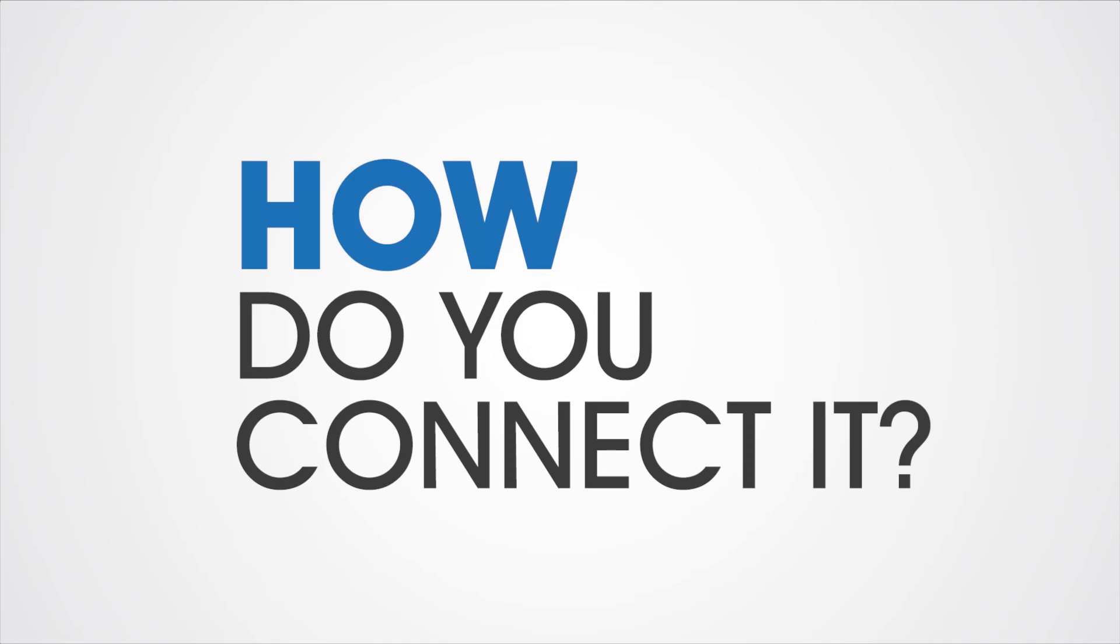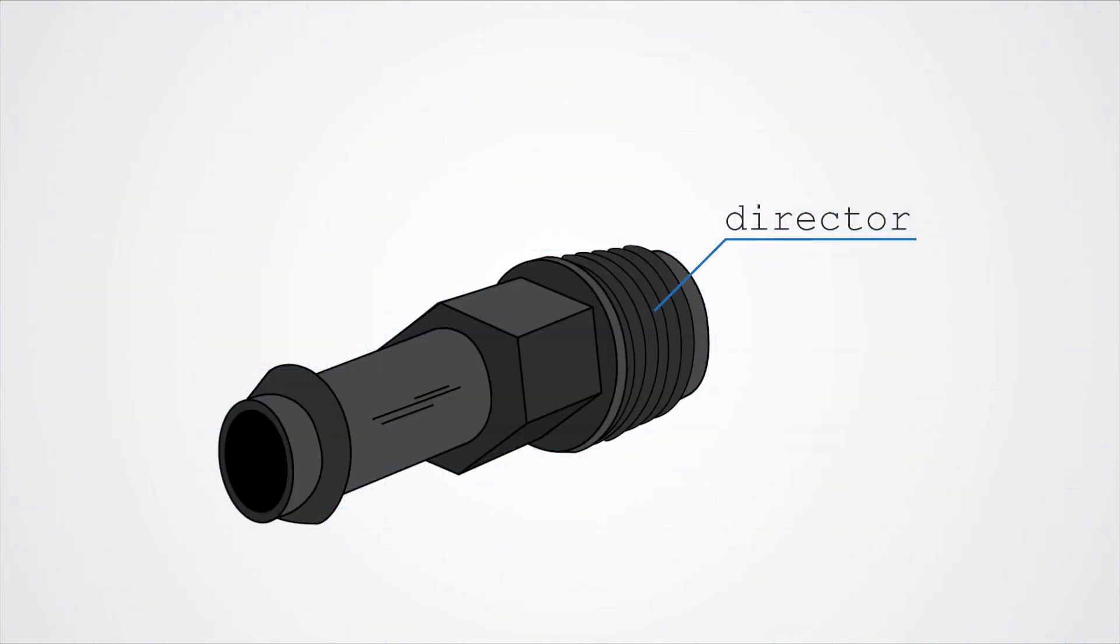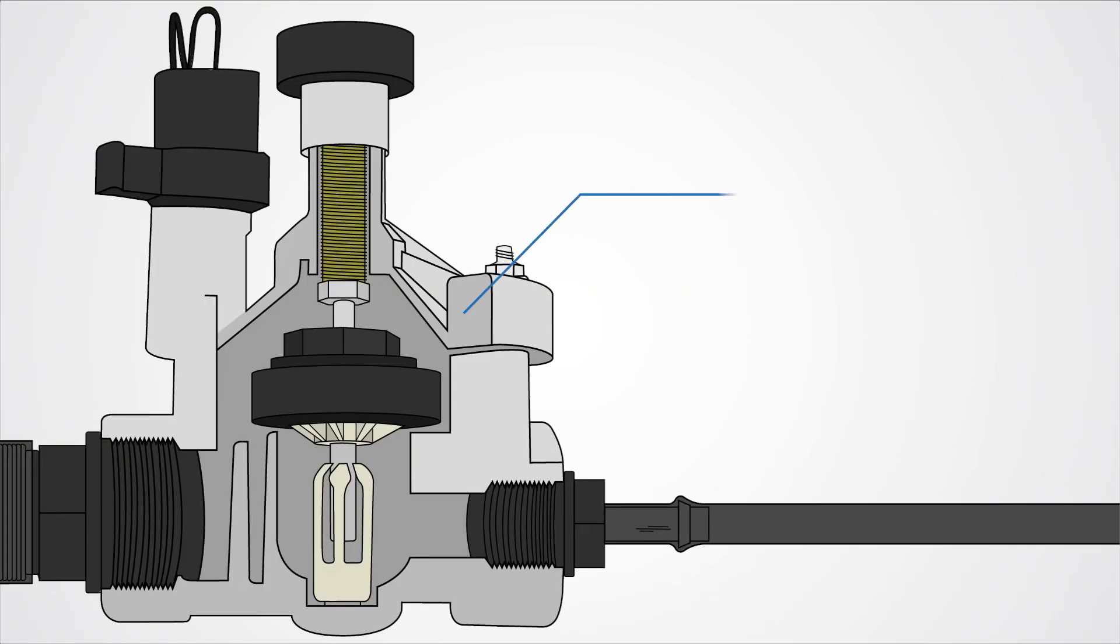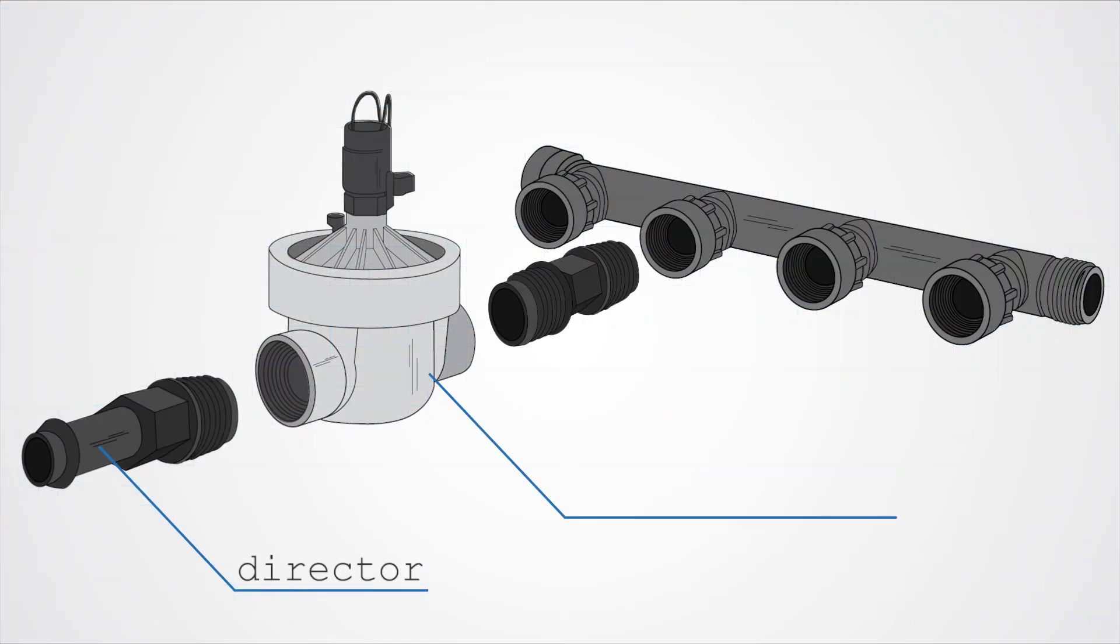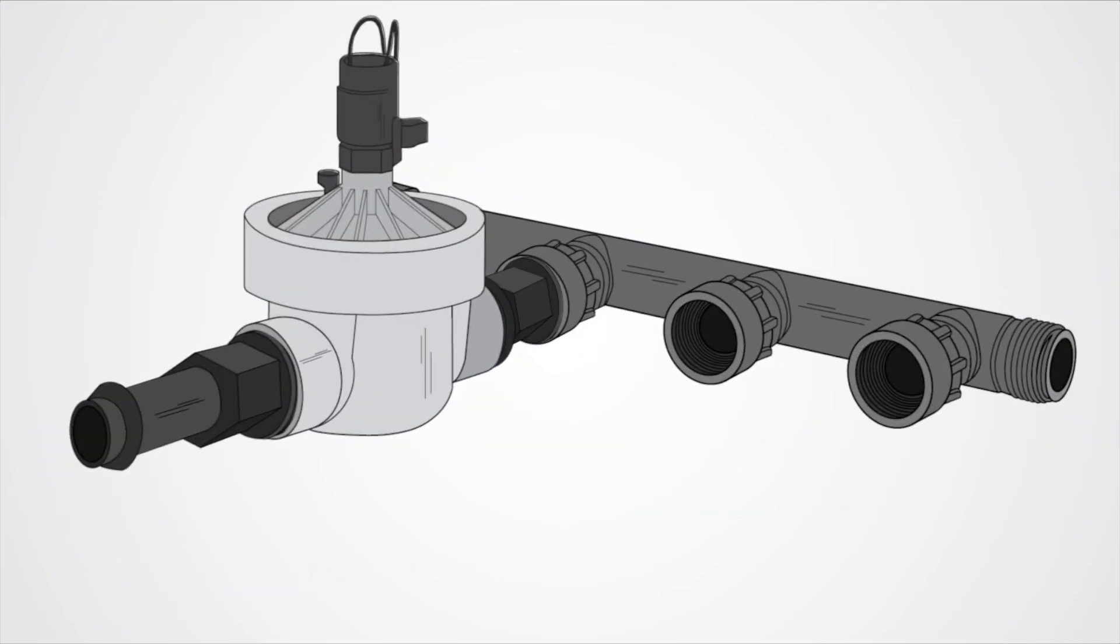To connect your automation to your irrigation system, you'll need these things. The director does what it says. It directs the water from the solenoid valve into the poly pipe, through to your irrigation system. The threaded end of the director screws onto the solenoid valve. And the nipple connects the manifold to the solenoid for the watertight connection.